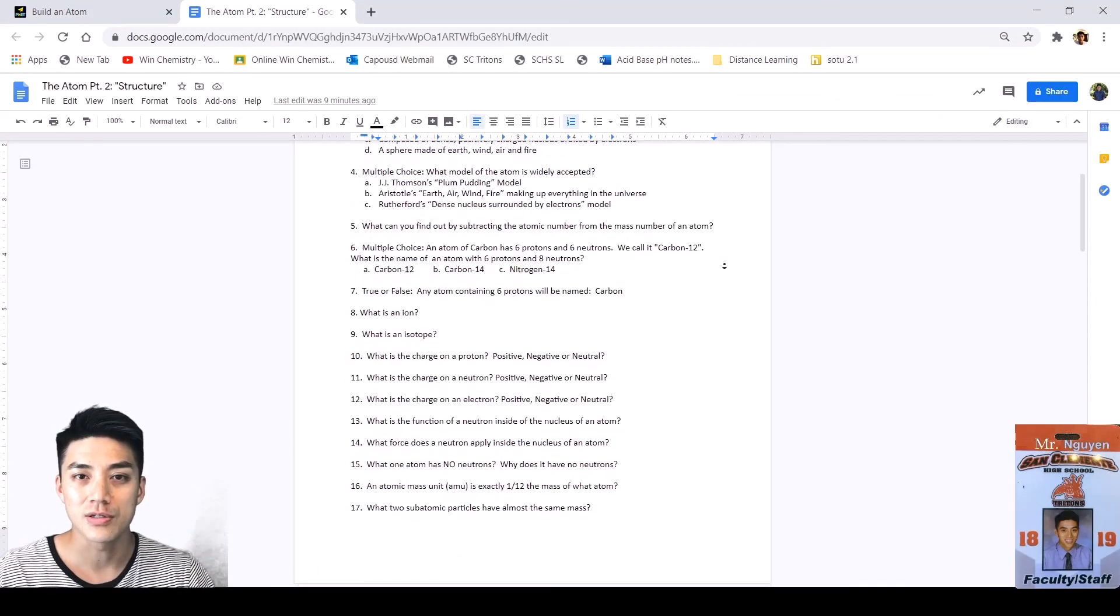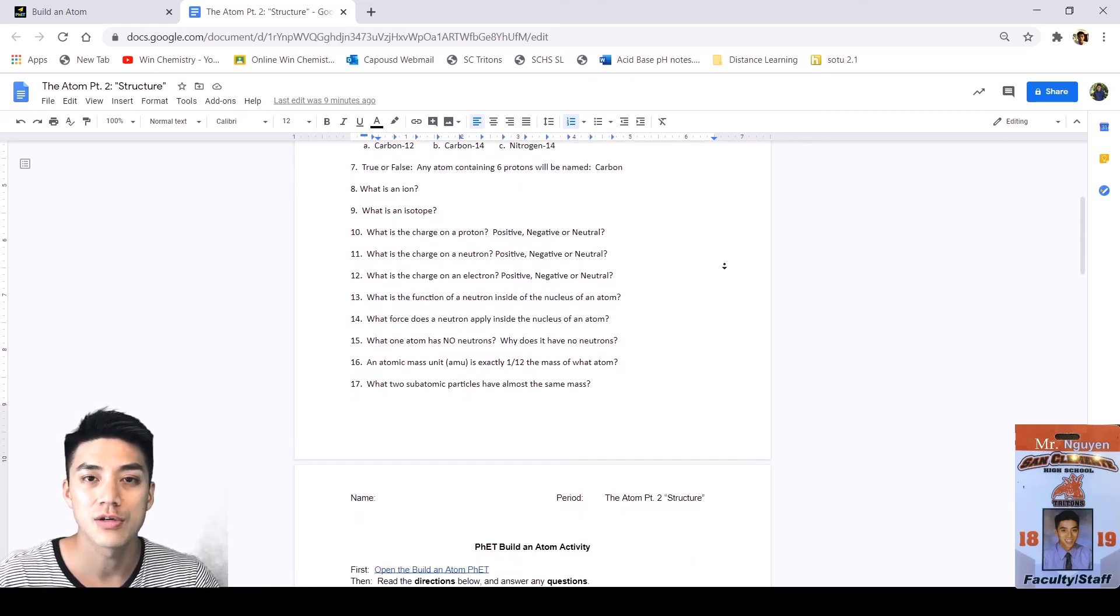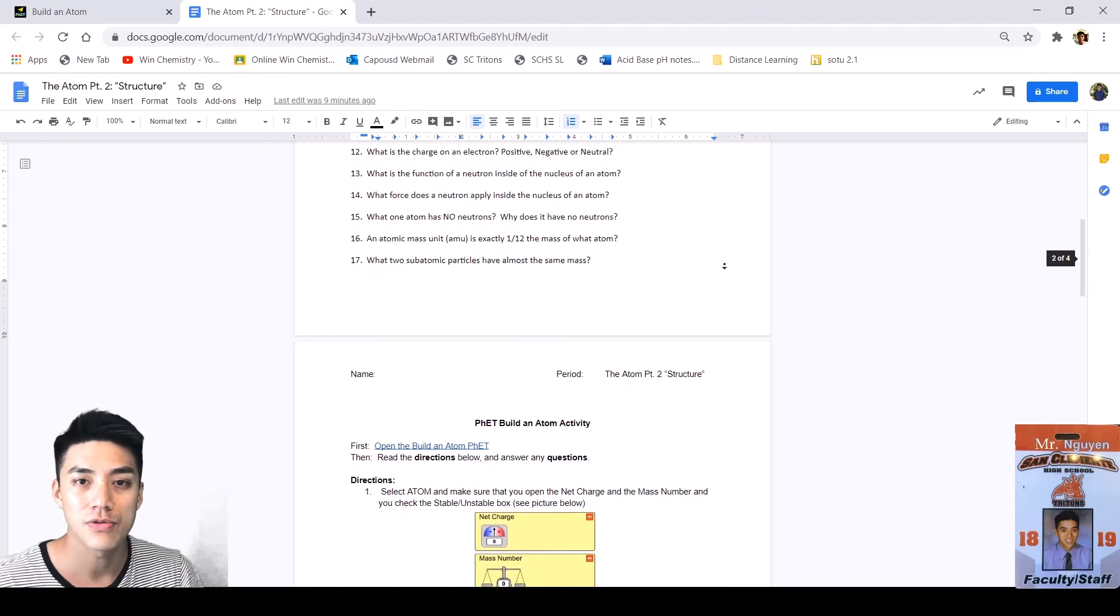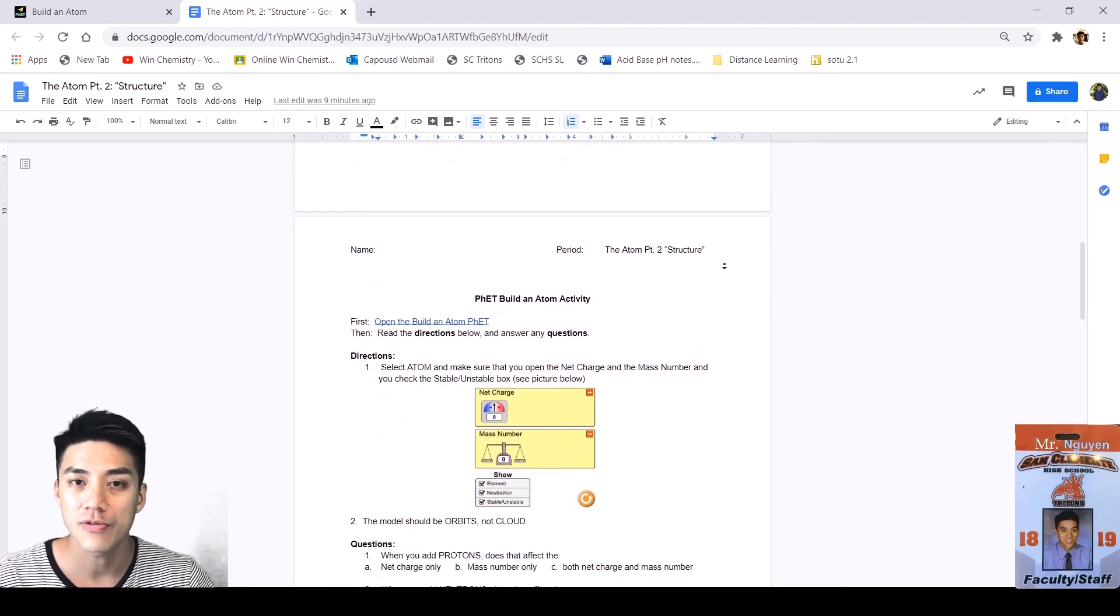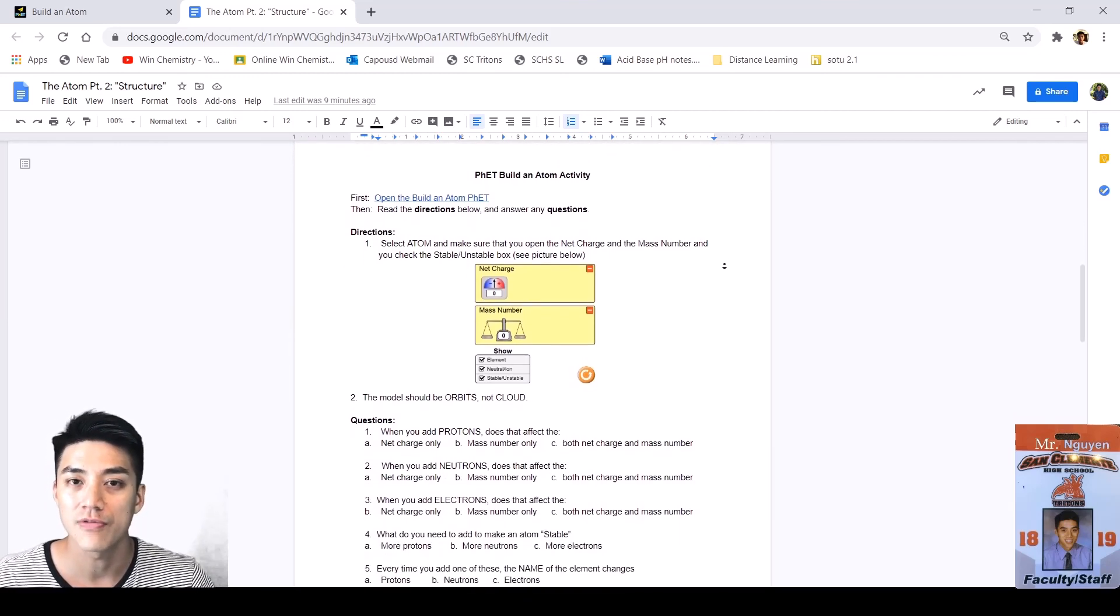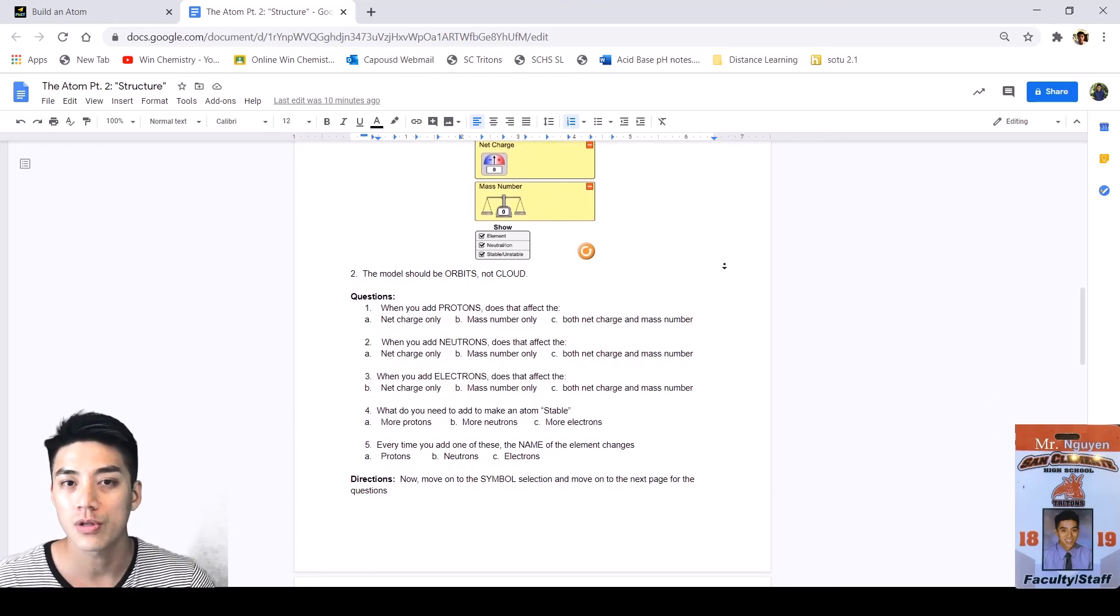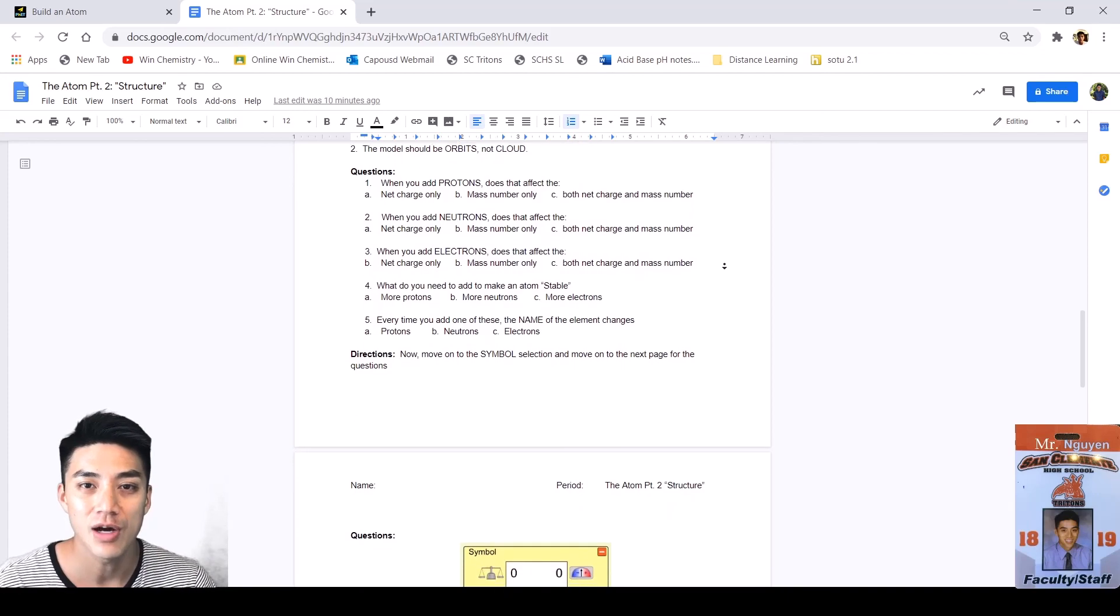All right, that concludes part two, which went over atomic structure. I discussed most of the questions in your notes, one through 17. Now it's your turn to go through the build an atom activity. I've included a few questions here and there for you to answer, but I think it really helps if you go through and try this out for yourself. Make sure you include an ID photo and the picture of the work that you'll submit online. Thanks for watching and I'll see you next time on Wind Chemistry.